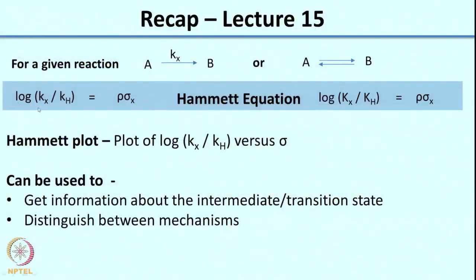Welcome back. In the last class we had looked at the Hammett equation. Essentially what the Hammett equation does is it correlates, for any given reaction, log of k_x over k_H, where x is the substituent varied on the aromatic ring. This correlation involves sigma, which is the substituent constant, and rho, called the reaction constant, which tells you how a particular reaction corresponds to the benzoic acid dissociation used for determination of the substituent constant.